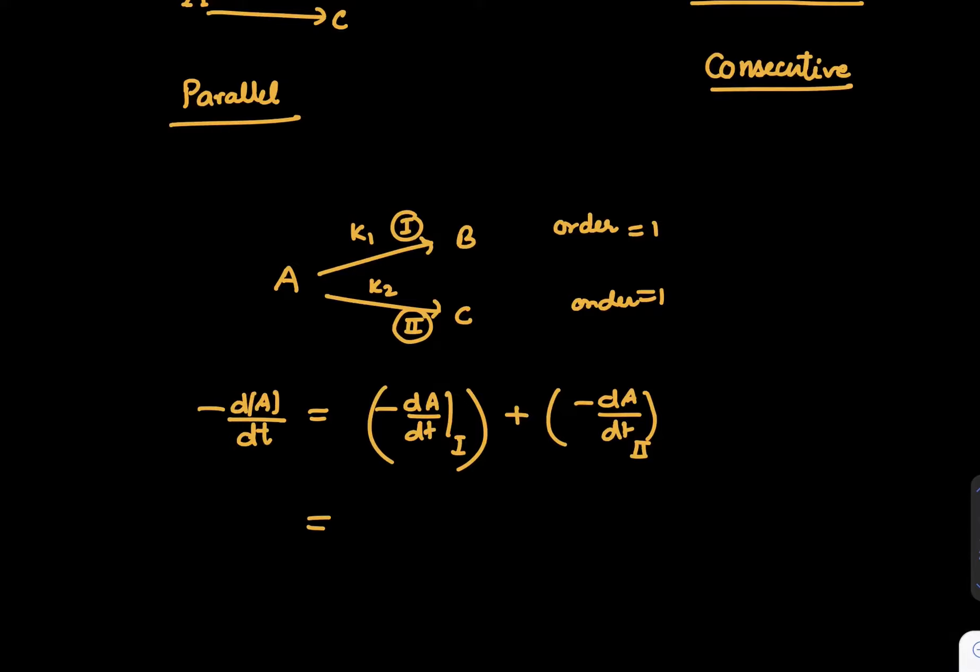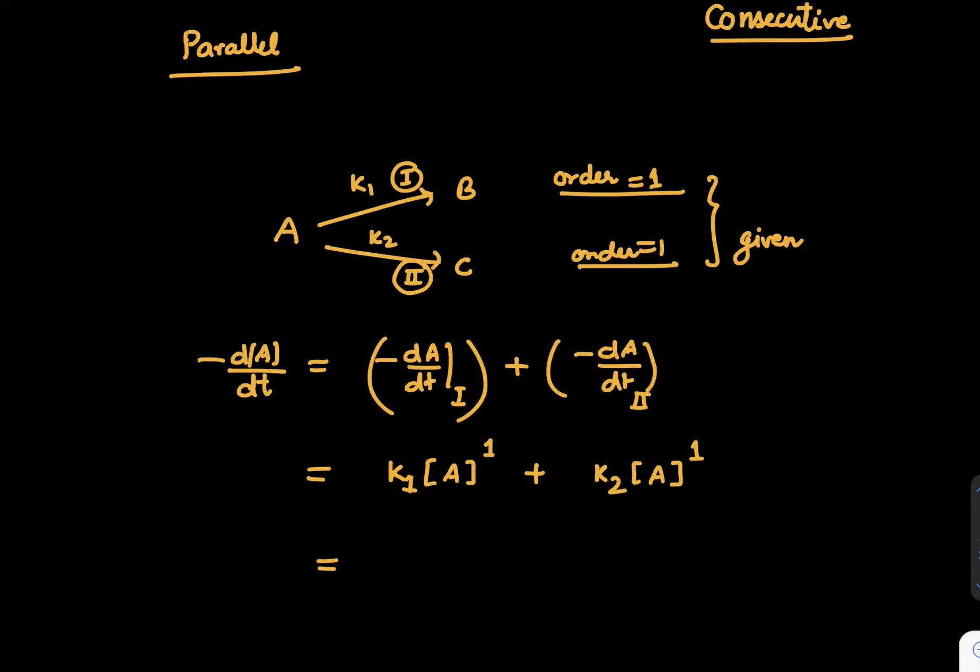What is minus dA by dt for the reaction number 1? It is rate constant multiplied by concentration of reactant raised to power order. Similarly, minus dA upon dt for second reaction is rate constant k2, concentration of reactant raised to power order, that is also 1. So generally speaking, order of both equations will be generally same. You can simply add both numbers and say, A raised to power 1, if you take out, it is k1 plus k2 times A, which is minus dA divided by dt.